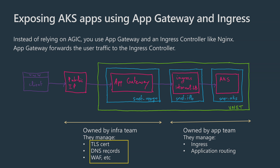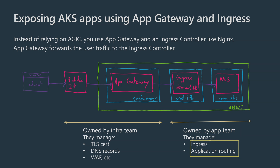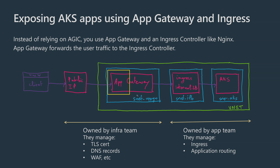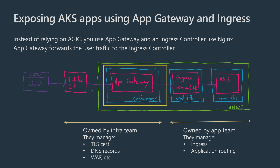What we gain here is a decoupling between the part owned by the infrastructure team - the Application Gateway and its public IP address - and the application team. The infra team manages TLS certificates, DNS records, and the WAF configuration. The application team owns and manages the ingress resources, their application pods and services. This decoupling also makes it easy to share the Application Gateway across multiple AKS clusters, even across peered virtual networks or through a hub virtual network.